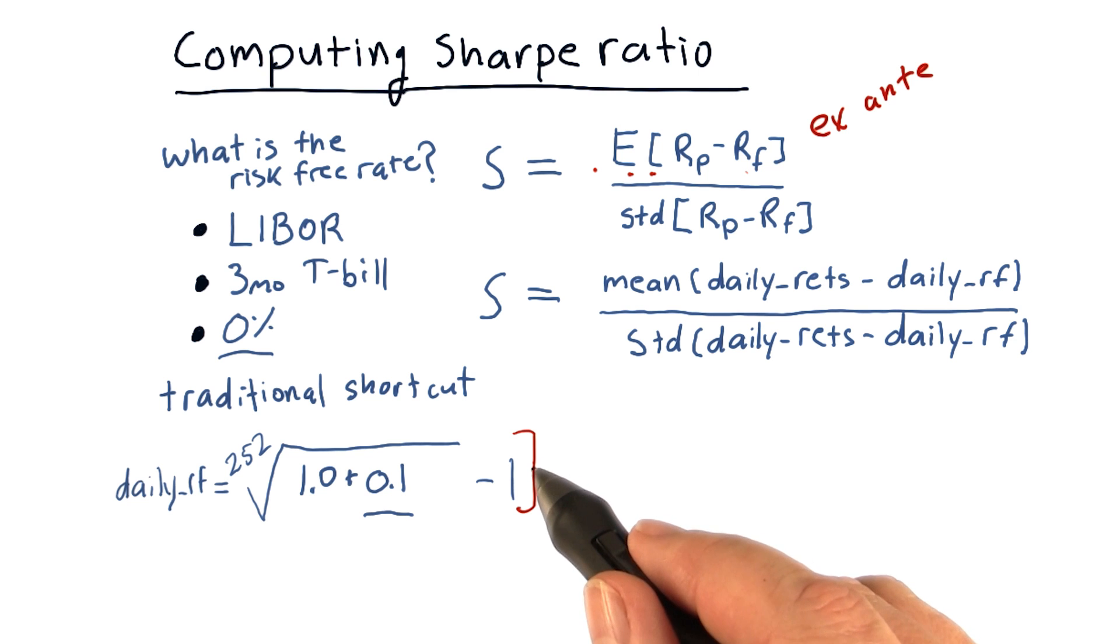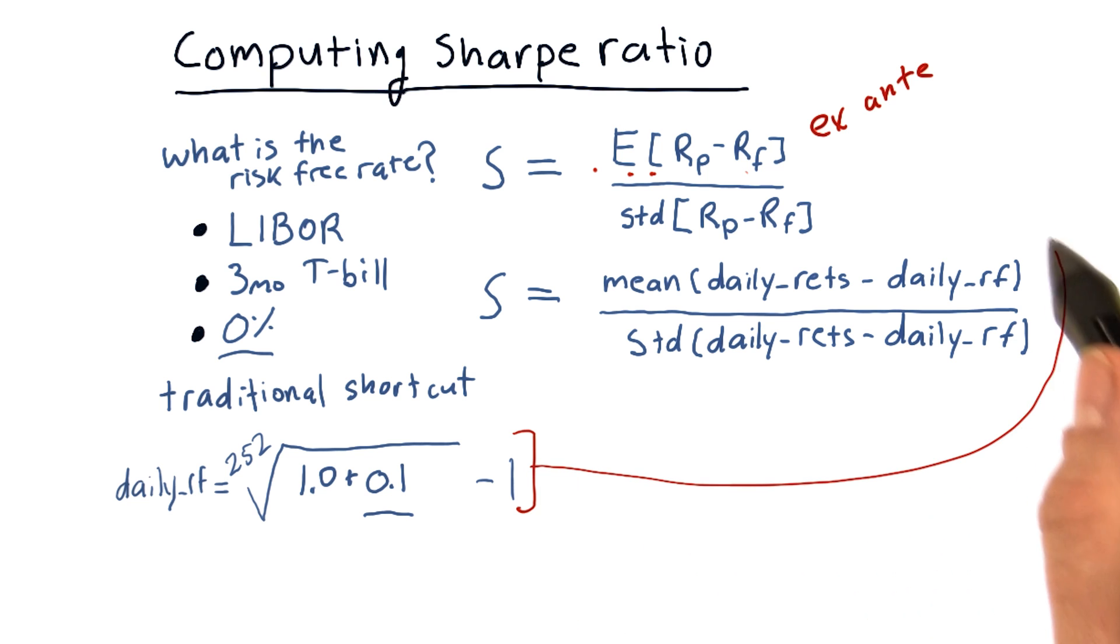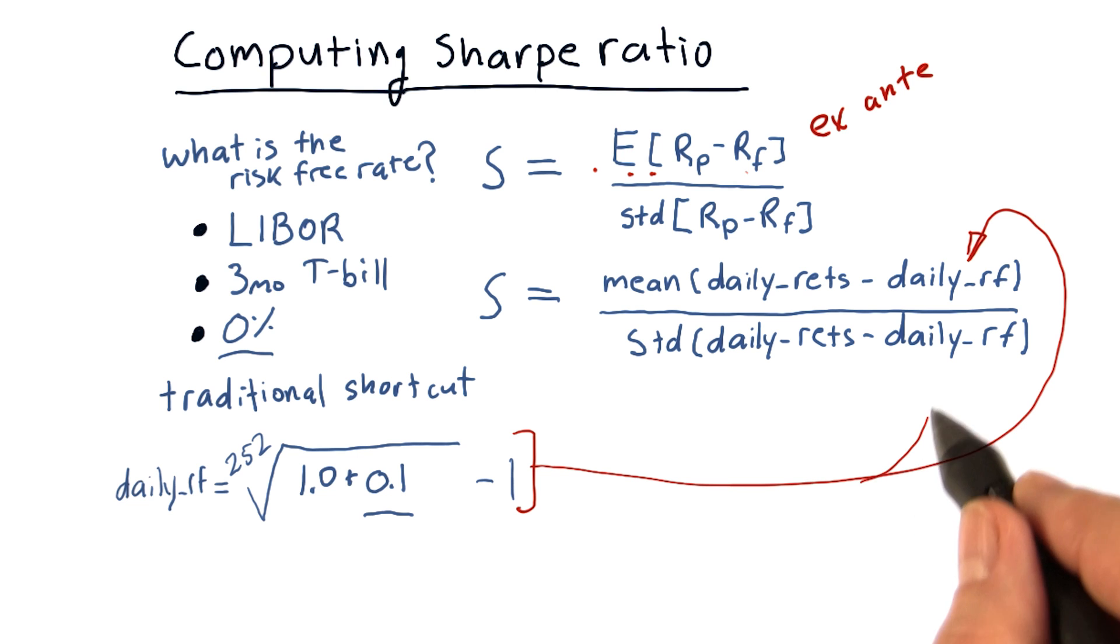Now suppose we want to use this value, which is fine. We would plug that in here, and also plug it in here.